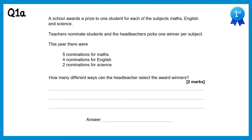So for this first question it's quite straightforward. We have five nominees for maths, four for English and two for science, so we just multiply those together. So five times four times two gives you 40.